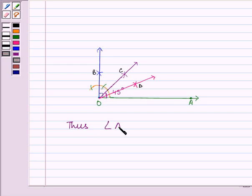So, angle AOD is equal to 22 and a half degrees. That is, this is the required 22 and a half degrees angle and this is also 22 and a half degrees.